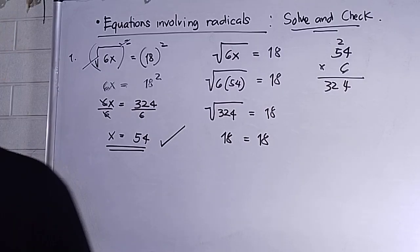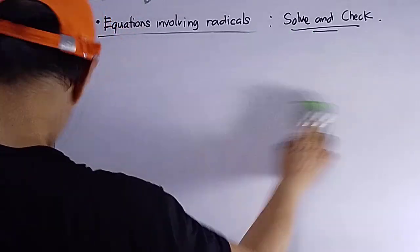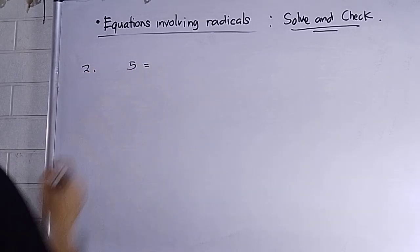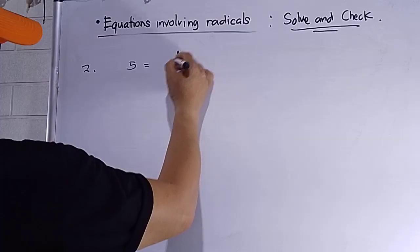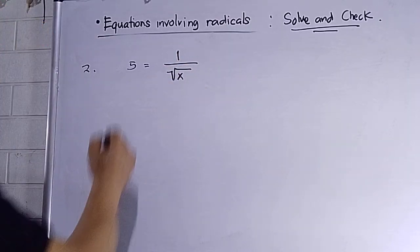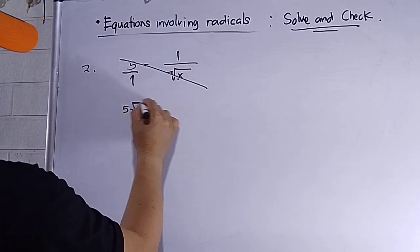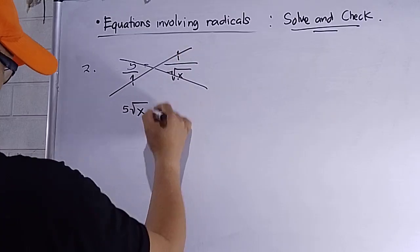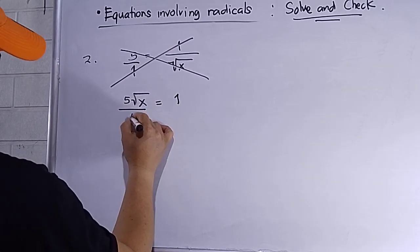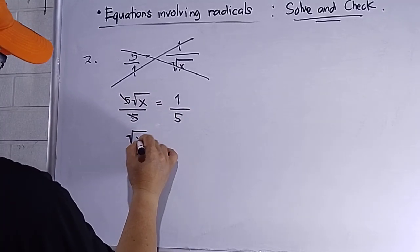Now let's proceed to number two. Number two: 5 equals 1 over the square root of x. I need to cross multiply first, giving 5 times the square root of x equals 1. Then divide both sides by 5, so the square root of x equals 1/5.